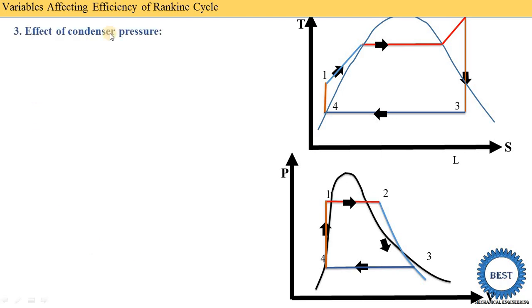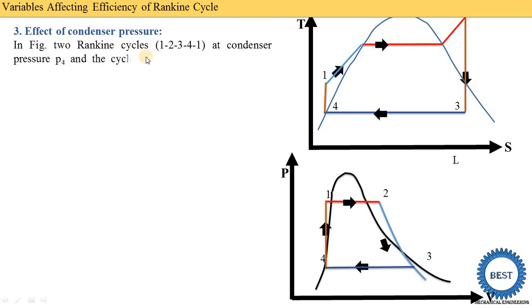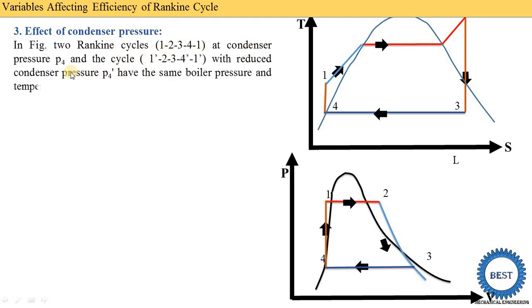The third method is the effect of condenser pressure — we reduce the condenser pressure. The condenser line is three to four, and reducing pressure brings it lower: three to four-dash. Two Rankine cycles are compared — one, two, three, four, one at condenser pressure P4 (original), and one-dash, two, three, four-dash, one-dash with reduced condenser pressure P4-dash, having the same boiler pressure and temperature. On the TS diagram, the new pressure line is three-dash to four-dash, drawn lower.